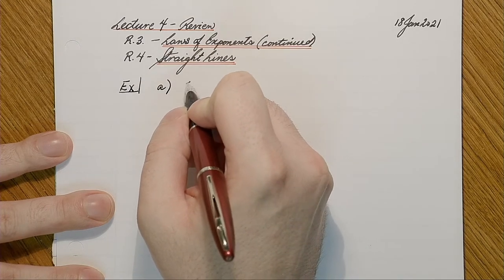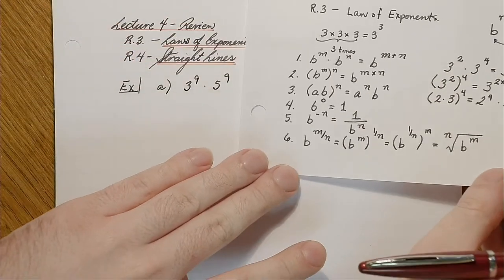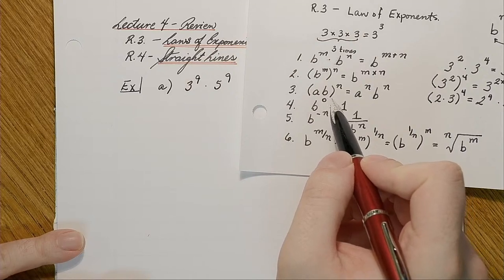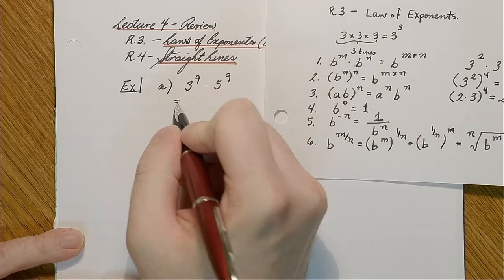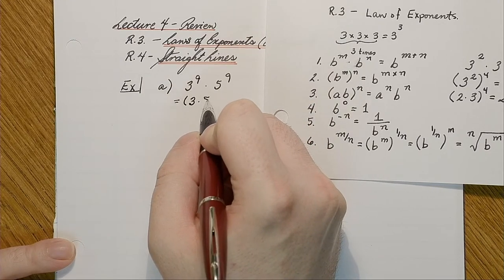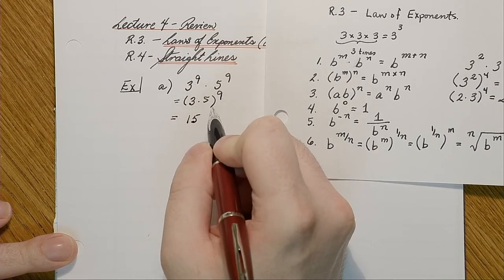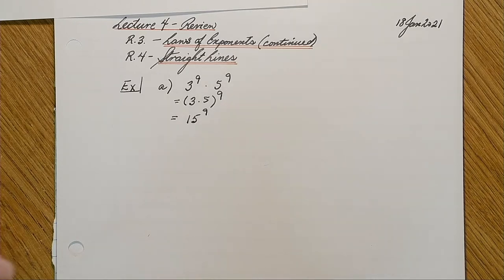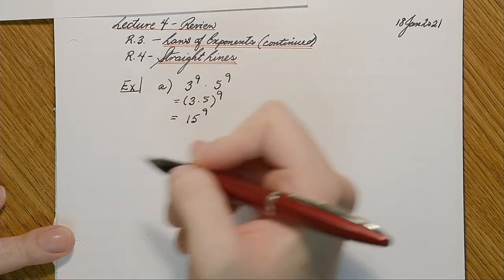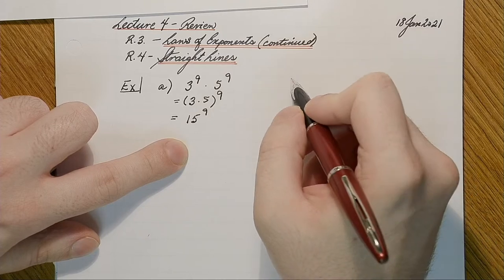For instance, we can have 3 to the ninth times 5 to the ninth, and we can simplify this using one of our rules. In this case we use rule three — we have two different bases but the same exponent. So 3 times 5 gives me 15, still to the ninth. Three to the ninth times 5 to the ninth is equal to 15 to the ninth.